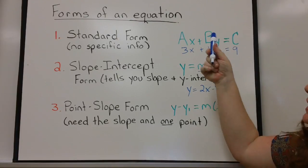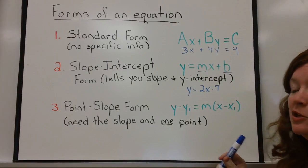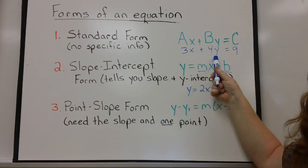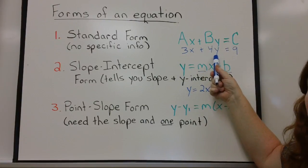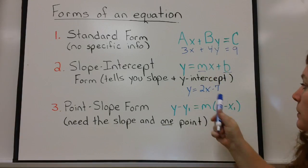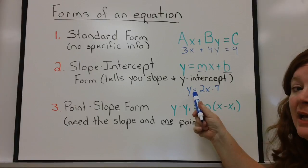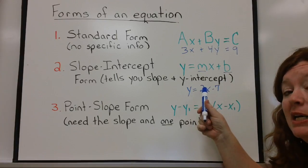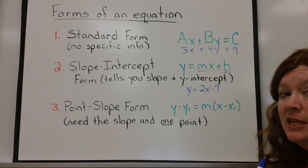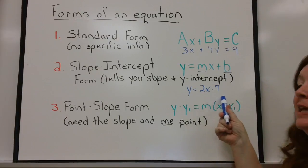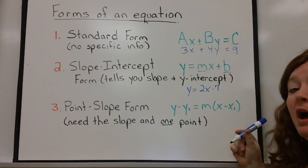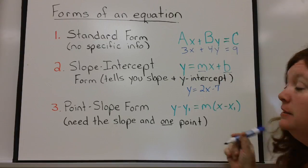Please note that in standard form, you always see the x and the y on the same side of the equal sign, whereas in slope-intercept form, the y is always a positive 1y by itself on one side of the equal sign and any other variables or values are on the other side. We're solving for y to be in that form.